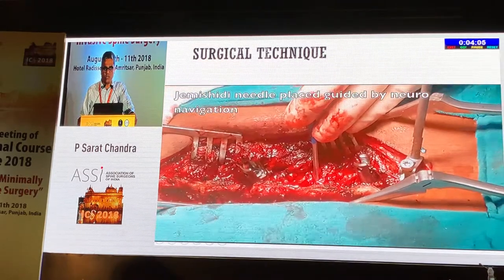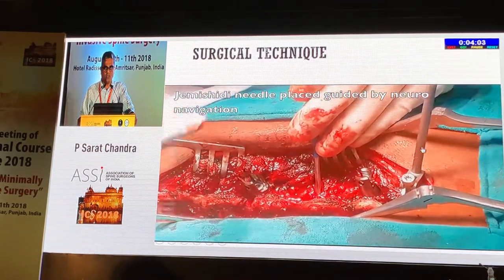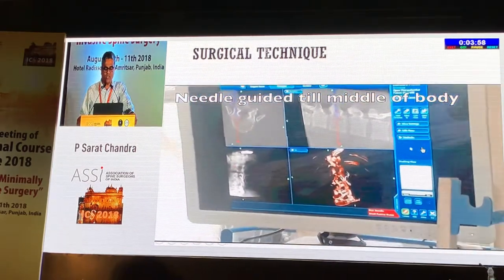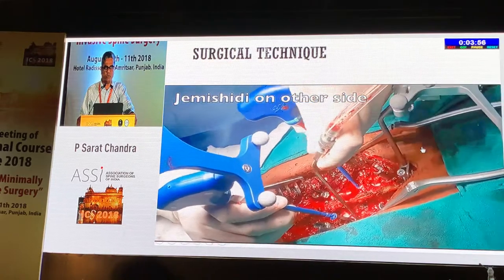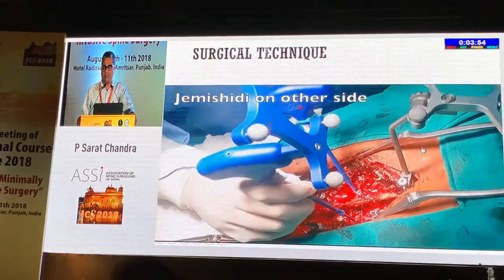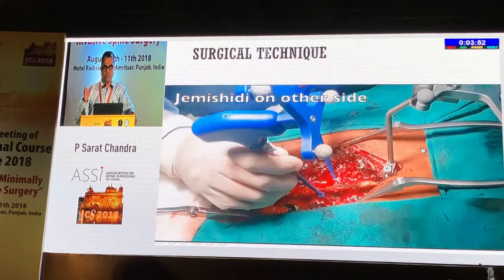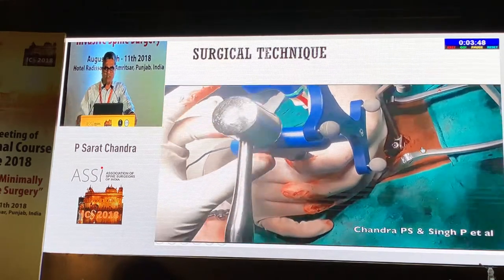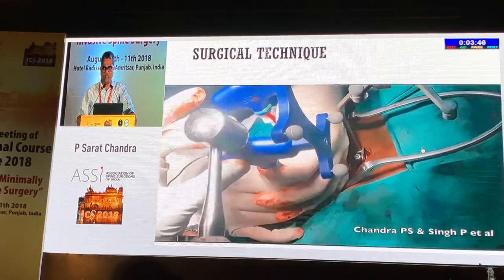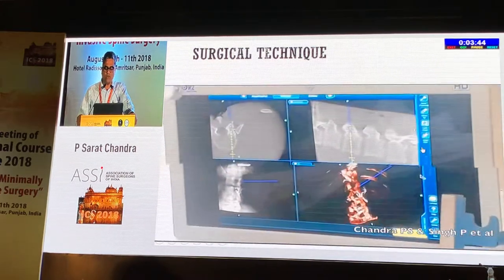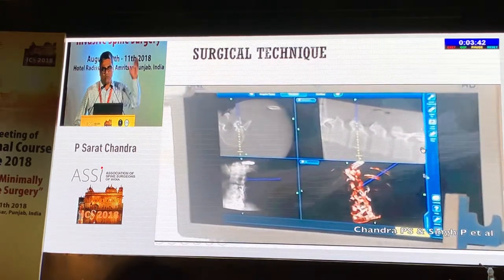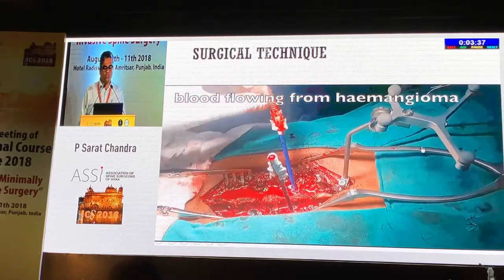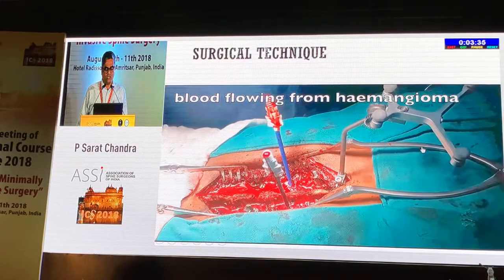There are two areas where you inject the alcohol. One is in the middle of the vertebral body where you inject about 3 to 4 cc. Then you withdraw to the vertebro-pedicular junction where you inject another 3 to 4 cc. So approximately 6 to 7 cc on either side, giving an average of 12 to 14 cc total — though in some complex large hemangiomas we have gone up to 20 cc.